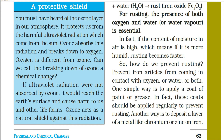How do we prevent rusting? Prevent iron articles from coming in contact with oxygen or water, or both. One simple way is to apply a coat of paint or grease on iron material so that oxygen and moisture cannot reach the iron and cause rust.